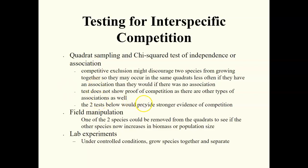Other tests provide stronger evidence for competition. Field manipulation tests involve removing one of the two species from the quadrats to see if the remaining species increases in population size. If it does, competition was likely keeping populations down when they were together. We could also grow species together and separately under controlled lab conditions to observe effects on population growth — very similar to Gause's experiment with Paramecium.